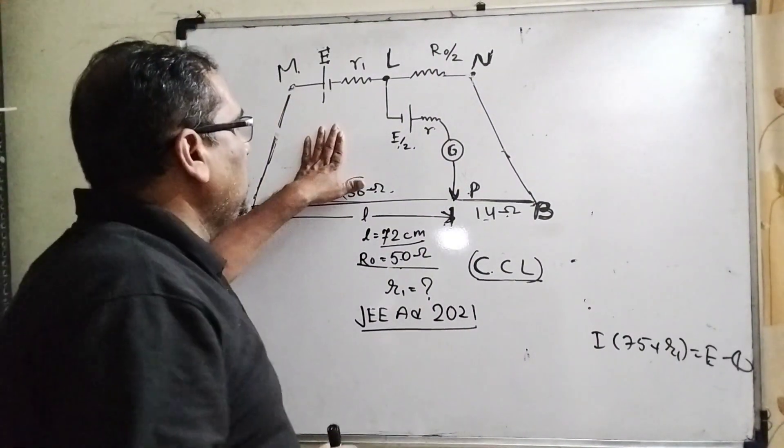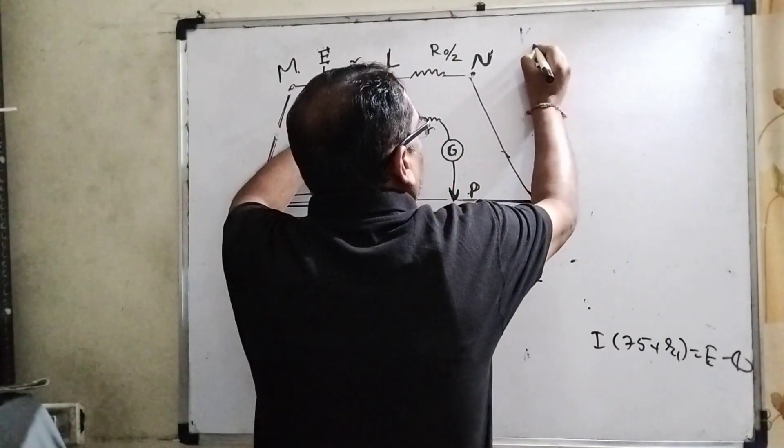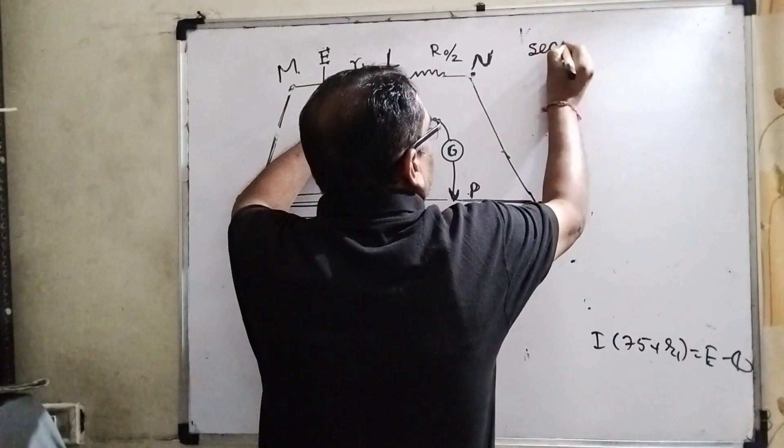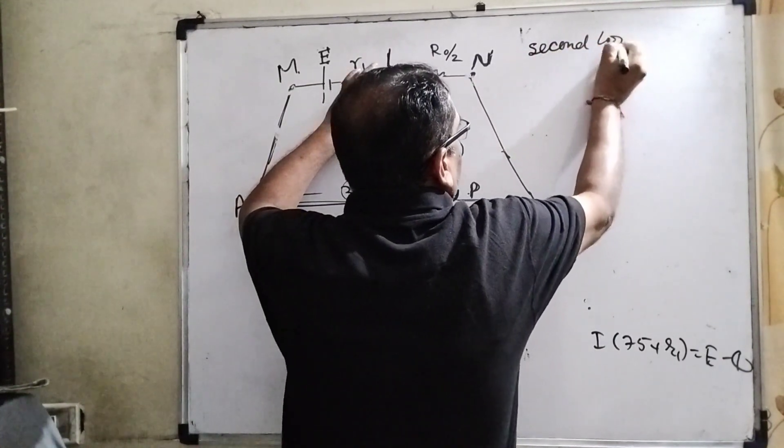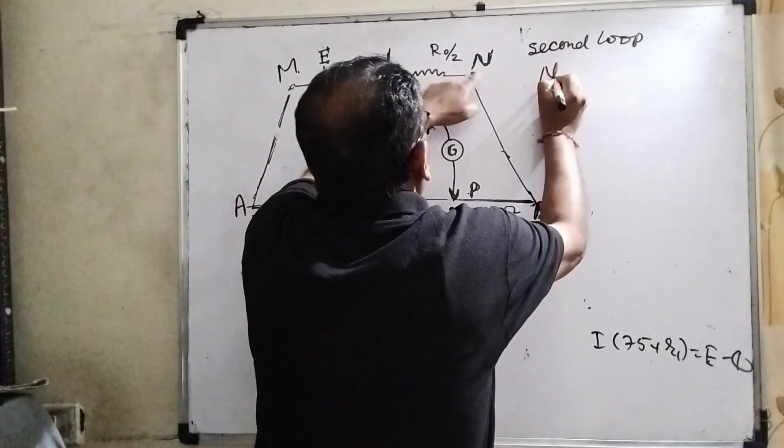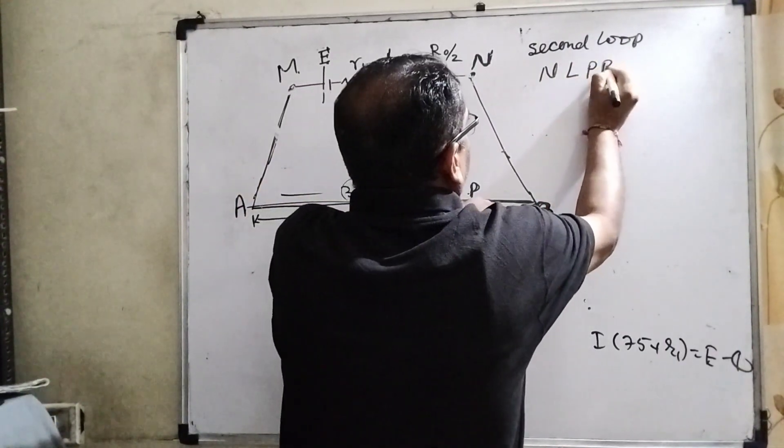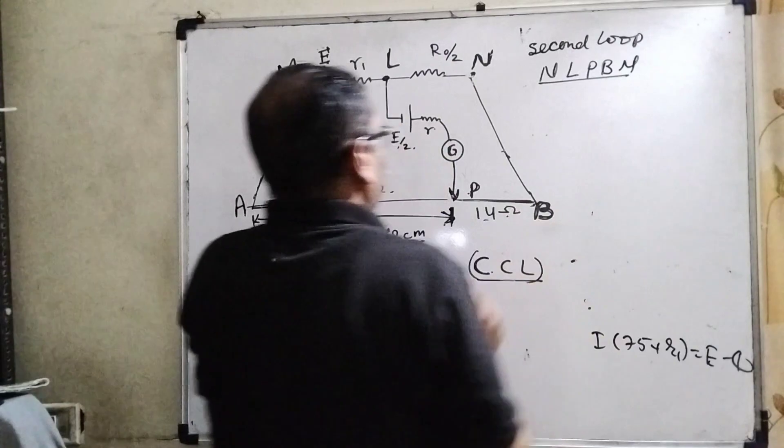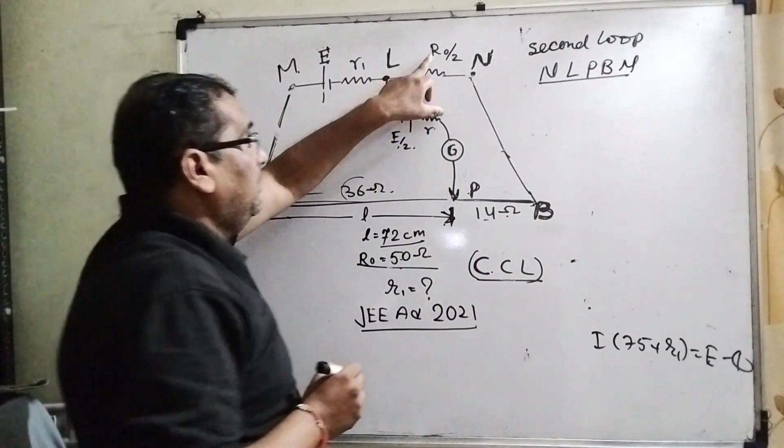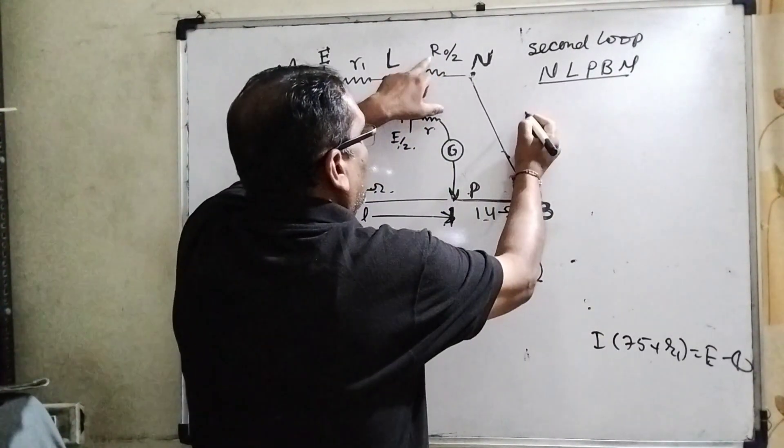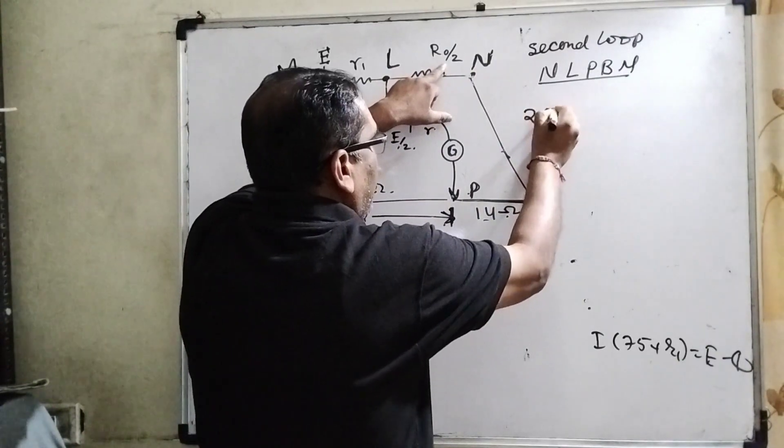Now second loop here. Second loop is NLPBN.